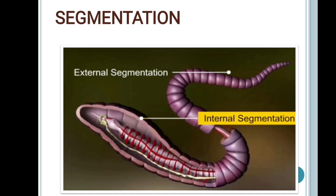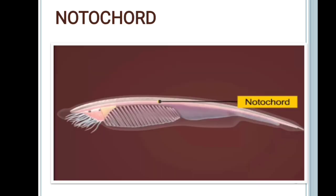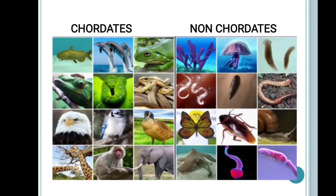The next feature is segmentation. Some animals are also classified on the basis of segmentation. The body of some animals, like arthropods, can be divided into external and internal segments. The last important feature is the presence or absence of a notochord. Some animals develop a rod-like structure on the dorsal side during embryonic development, which is known as the notochord. Animals with a notochord are known as chordates, and animals without notochords are known as non-chordates.